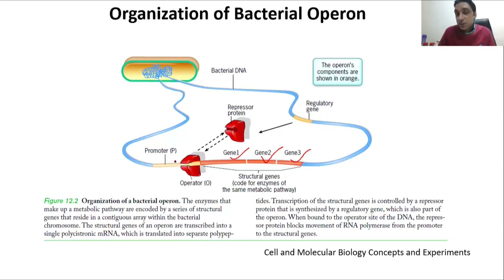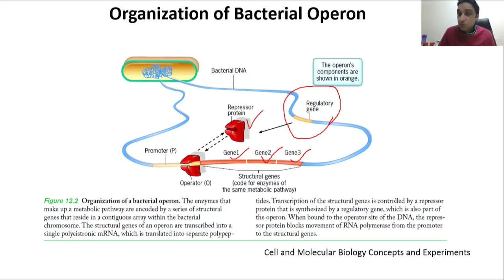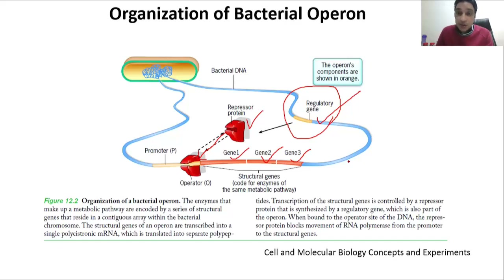There is a regulatory gene that is supposed to control the expression of these three genes. When expressed, the regulatory gene produces a regulatory protein. If it is a repressor, it will bind to the promoter region, and as long as it is there, the three genes will not be expressed. As long as the regulatory gene is working, it keeps producing the repressor protein, which keeps blocking the promoter region.